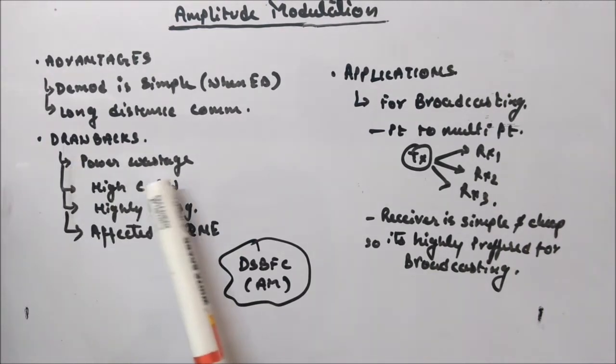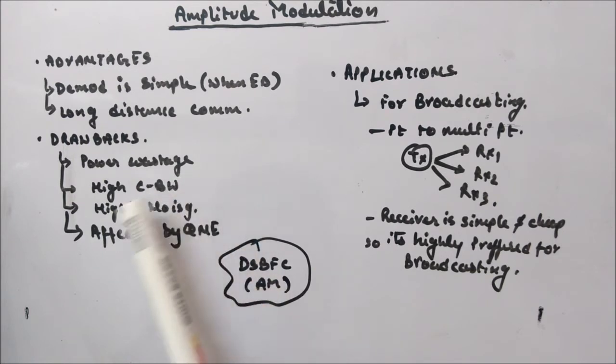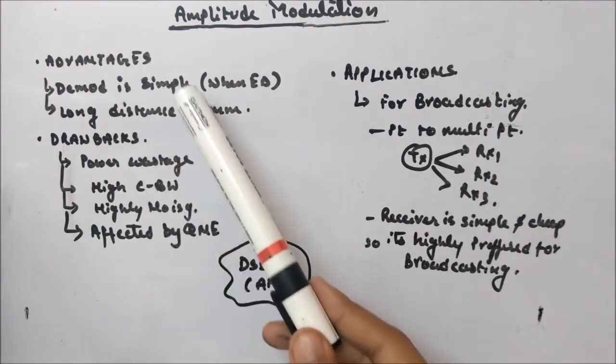Then the drawbacks are carrier power is wastage actually. Then it requires high channel bandwidth, highly noisy, and it is affected by quadrature null effect as well. So these are the drawbacks, these are the advantages.